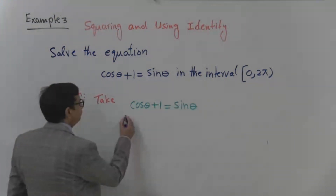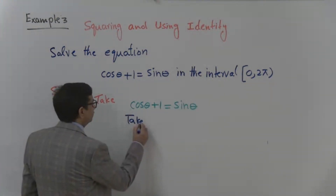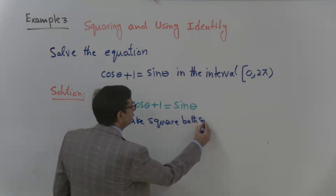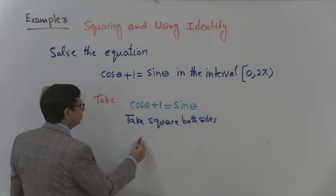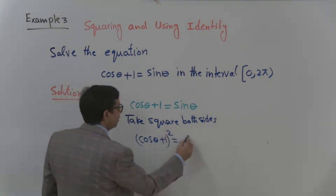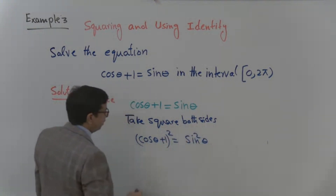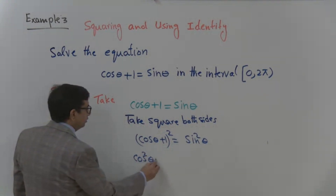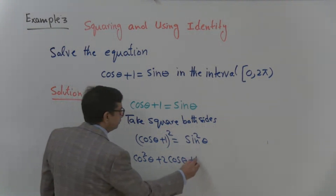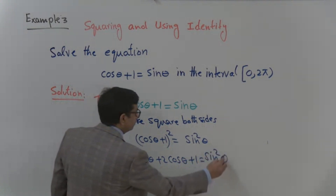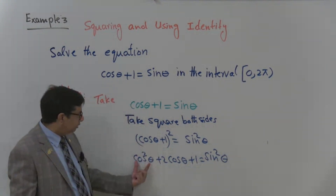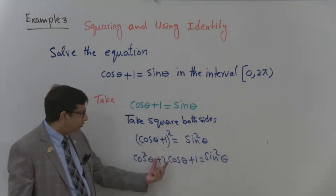So we take the square of both sides. The squaring gives us sine squared theta on the right side. We simplify using the formula for (a + b) whole squared: first number squared, last number squared, and twice the product.